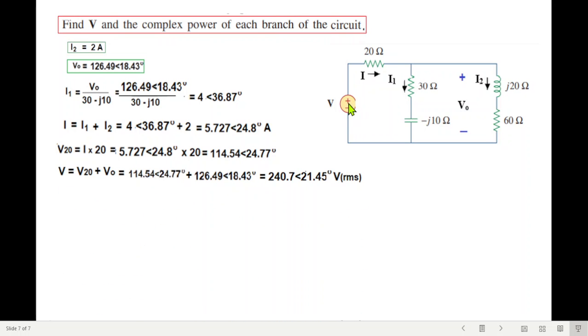The final voltage, V is the voltage across the circuit. V20 plus V0. Put the value and calculate using your calculator in complex mode. To calculate power, the complex power, we use the same formula, V into I conjugate. The power across 20 ohm resistance is V20 into I conjugate. V20 we already know, I conjugate we know, total. Just change the sign. This gives S20, the power in the 20 ohm resistance.